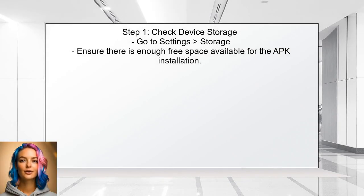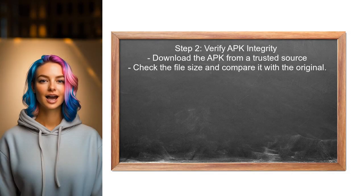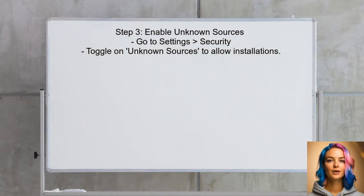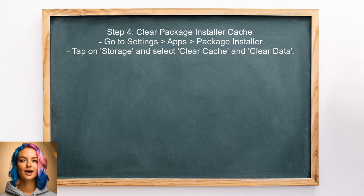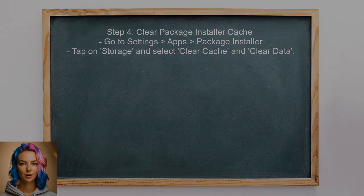To address the error, we'll first check the device's storage, since insufficient storage can often lead to installation failures. Next, verify that the APK file is not corrupted — this can be done by downloading the APK again from a trusted source. Then, enable installation from unknown sources, which allows the installation of APKs not from the Google Play Store. Finally, if the issue persists, try clearing the cache and data of the package installer app to resolve any temporary issues.